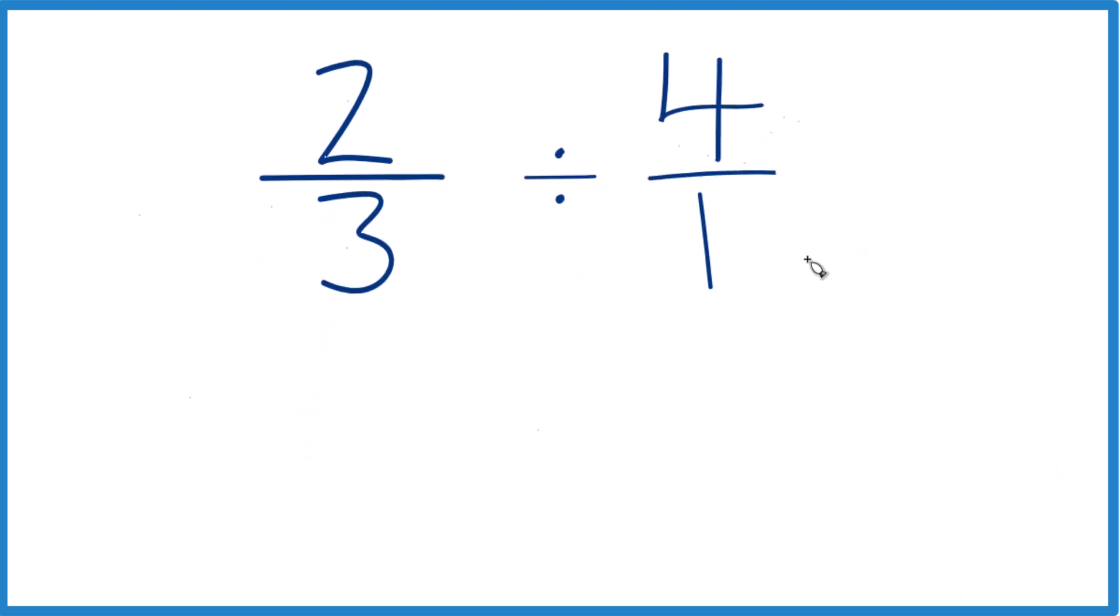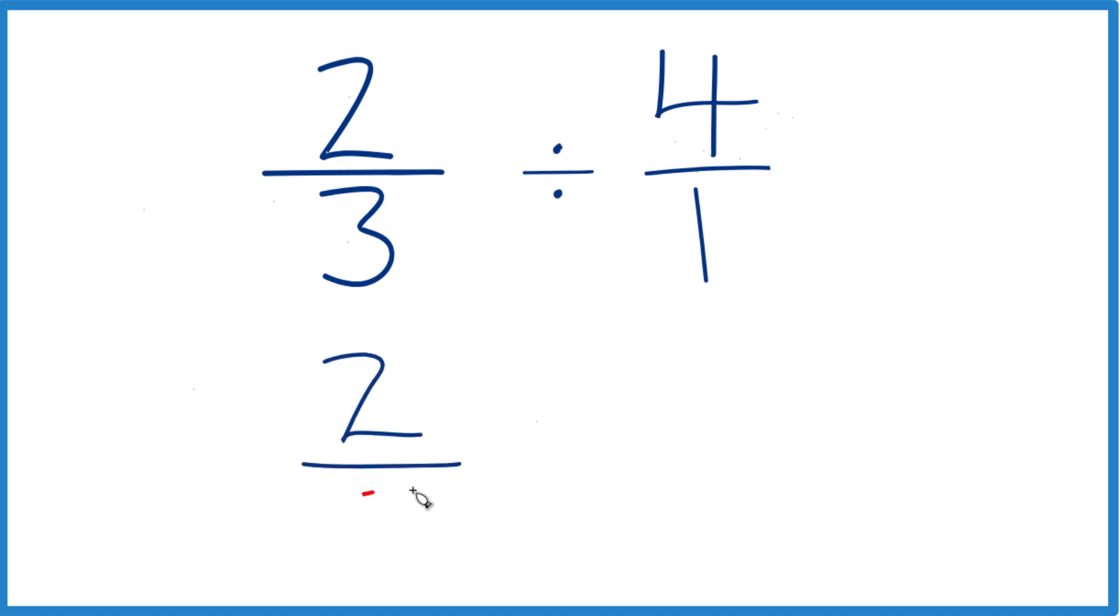But now everything's lined up. We take our two-thirds here, and instead of division, we're going to multiply by the reciprocal of four over one. So the denominator comes to the top, numerator comes to the bottom. So we have one over four. One over four, that's one-fourth.